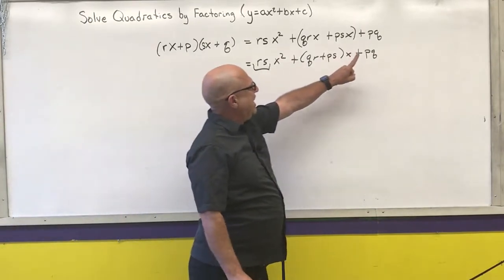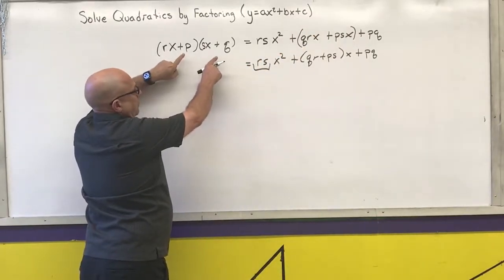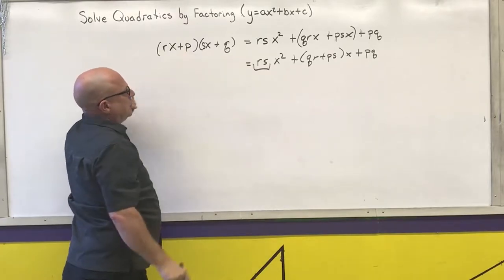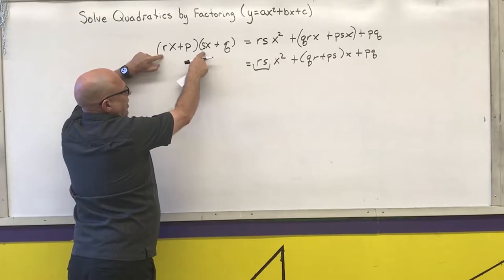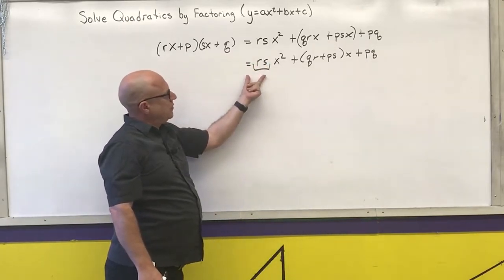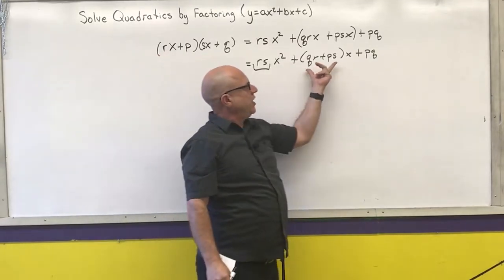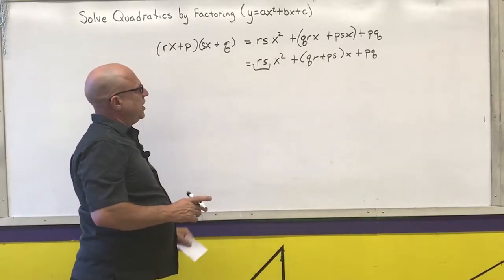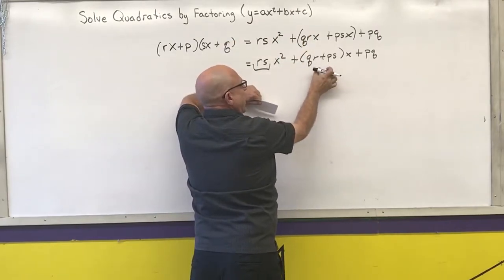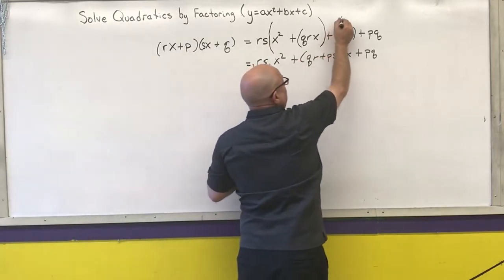Our last term, the c term, has to come from the product of the last terms. Our first number has to come from the product of the two first numbers. And the middle number comes from the combination — the addition — of this multiplication problem. So we're going to take our original equation and split the middle part out so we can factor it by grouping.